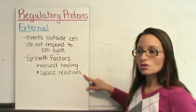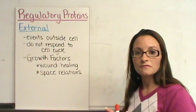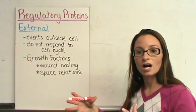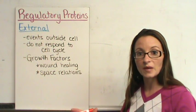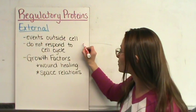These are controlled mostly by spatial relations. So if the cells are not where they need to be, not filling the space that they need to be, they will continue to reproduce.